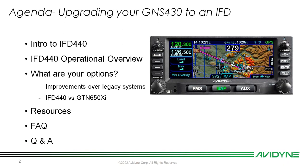We're going to be talking about some options as well — some improvements over the legacy systems, how things have changed over the last several decades in avionics. Then we'll get into a comparison between the 440 and what most people would say is the equivalent in the industry: the GTN 650xi. We'll also go over some resources, hit some frequently asked questions, and then run through a quick Q&A.